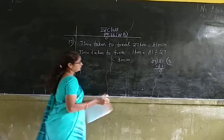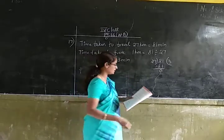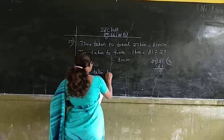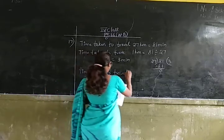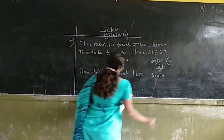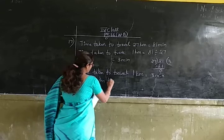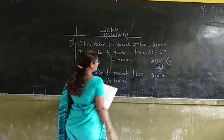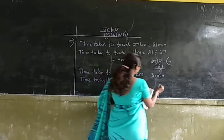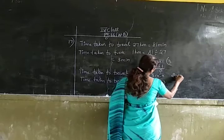Now we have to find out the time taken to travel 207 kilometers. For that we have to use the operation multiplication. Time taken to travel 1 kilometer is 3 minutes. Time taken to travel 207 kilometers is equal to 207 multiplied by 3. Now let us multiply 207 by 3.